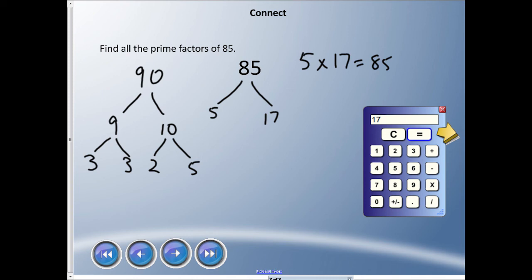Will it equal 90? Those are all prime numbers. So I'm going to clear this out. 3 times 3 times 2 times 5 equals 90. So that is how you can make a factor tree showing all the prime factors of 85.